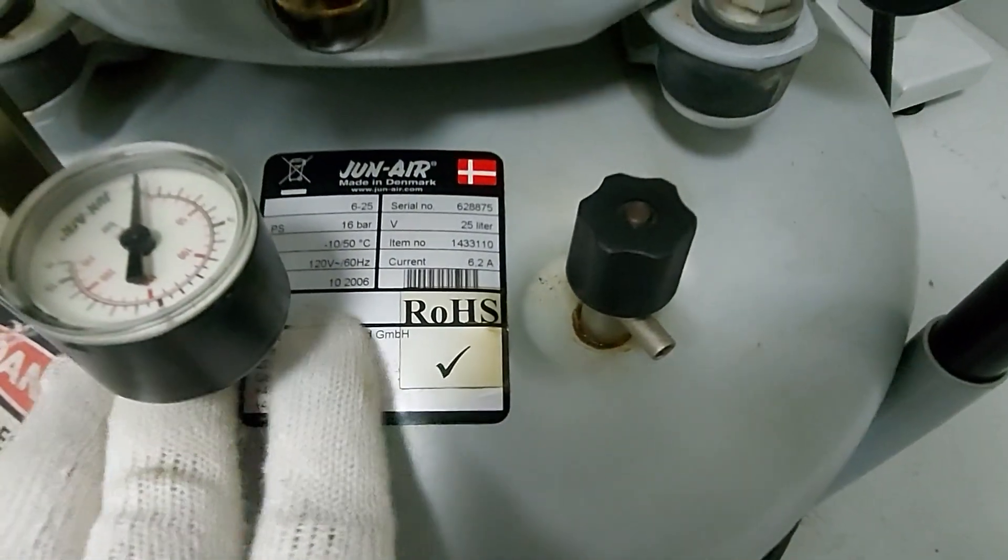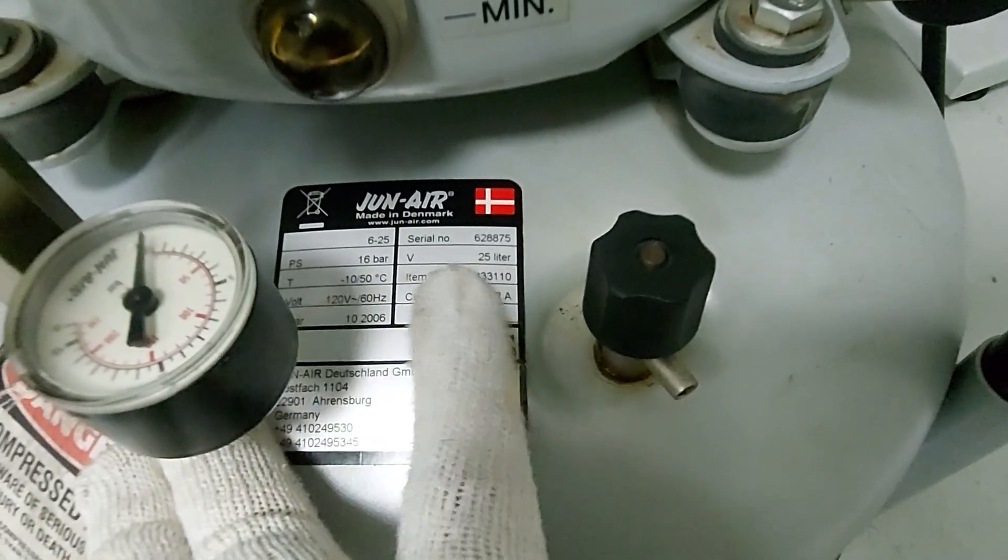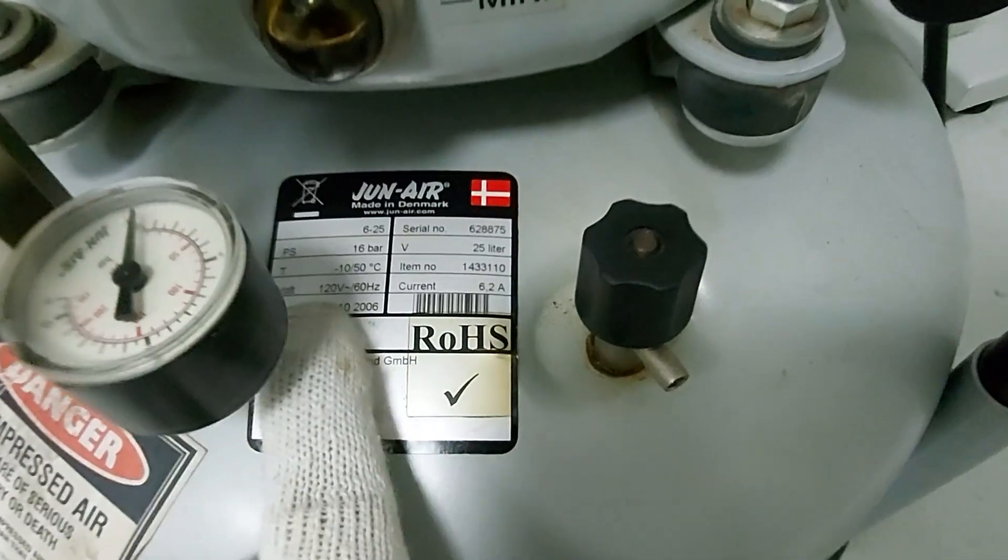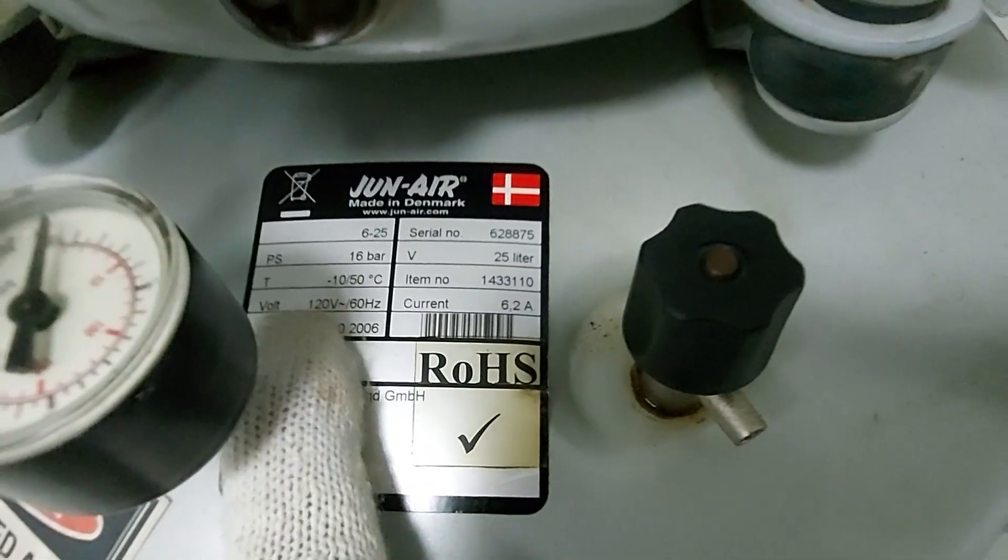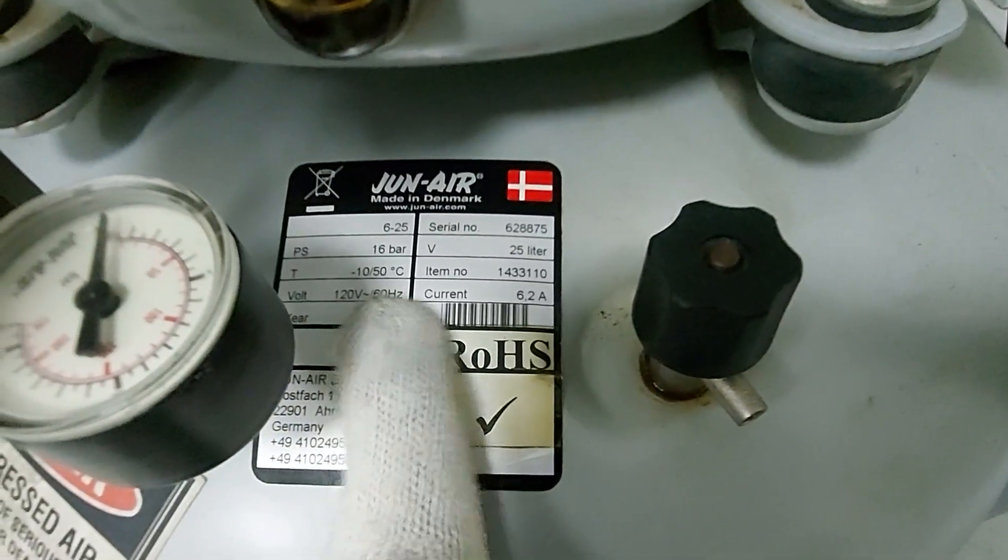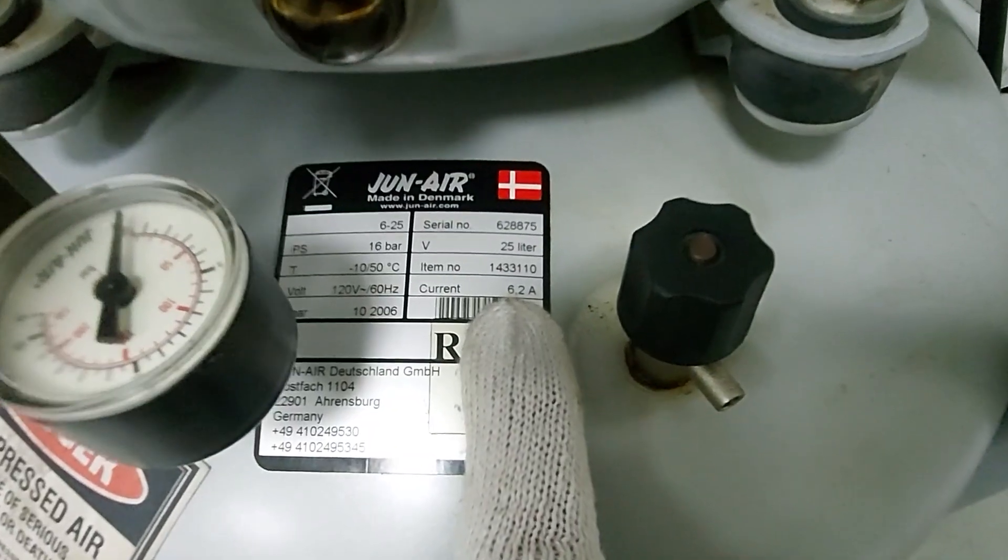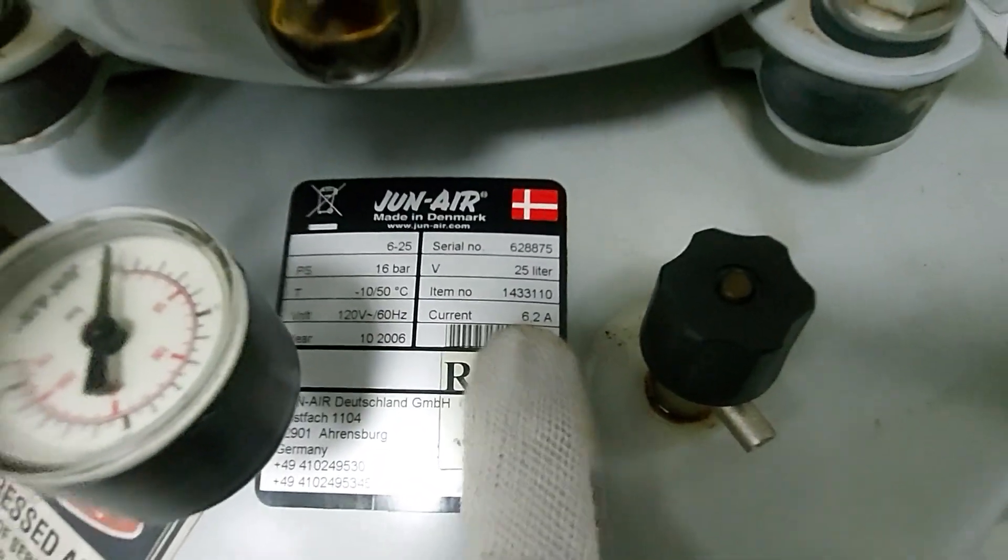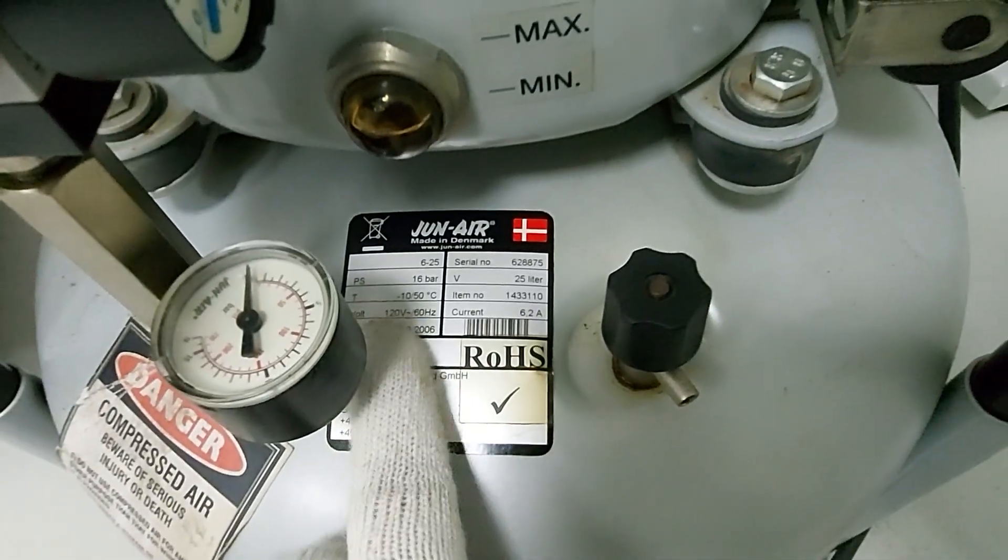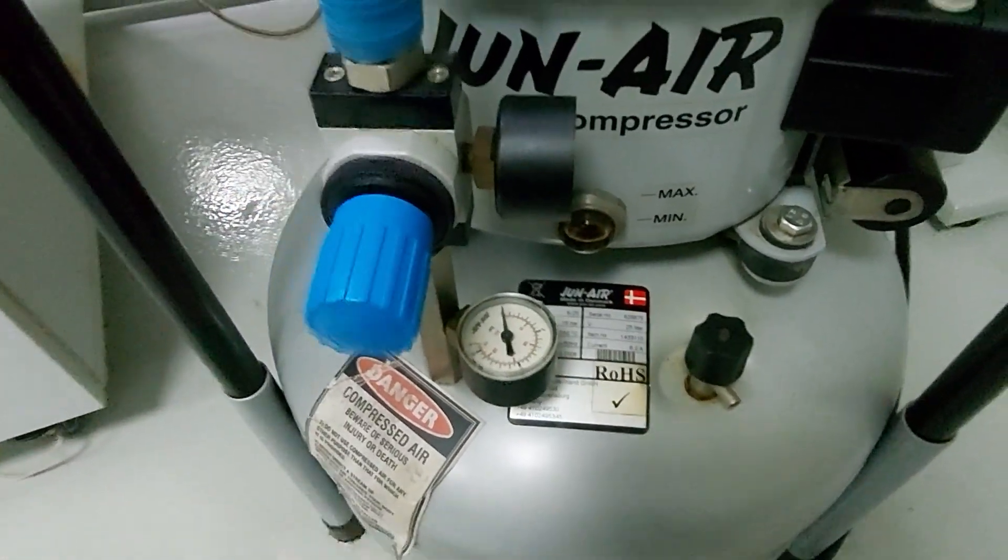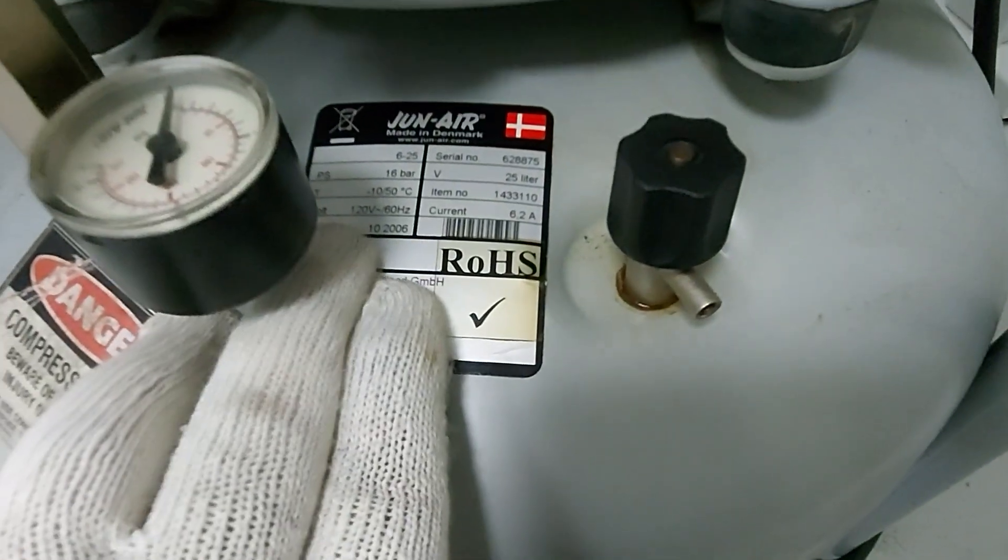So let's see the nameplate. In the nameplate you have this voltage here, so it's 120 volt and current is 6.2 amps. This is 120 volt, means you cannot connect it to 220 or else the motor will damage. So 120 volt and 6.2 amperes.